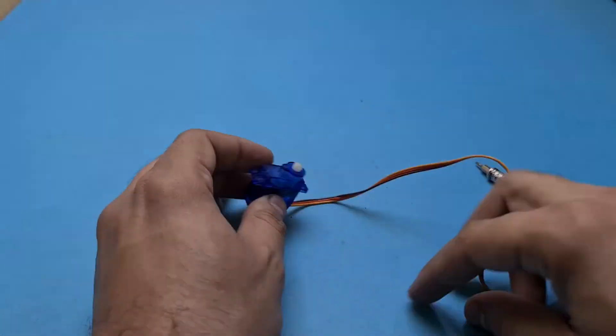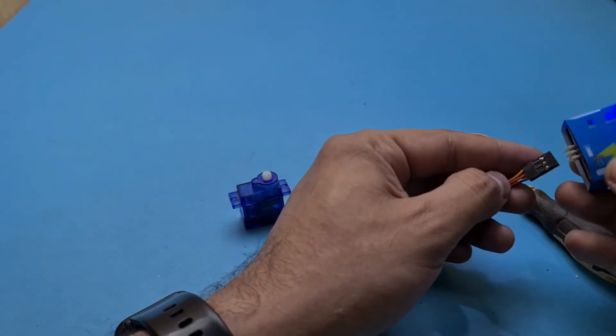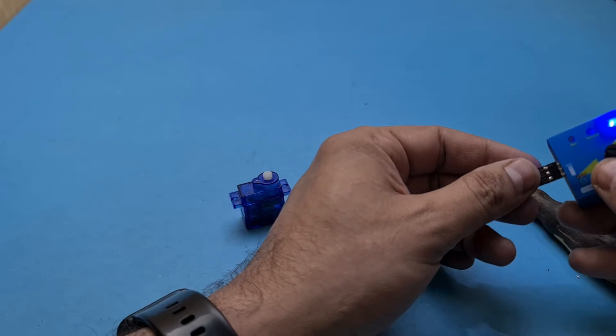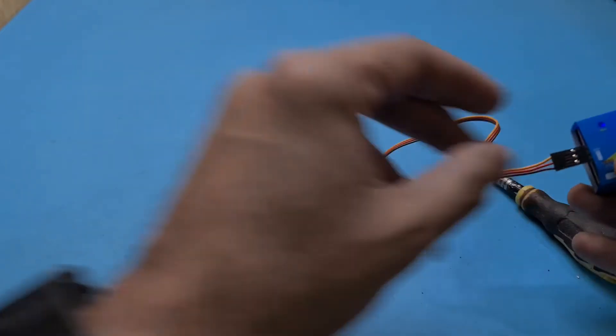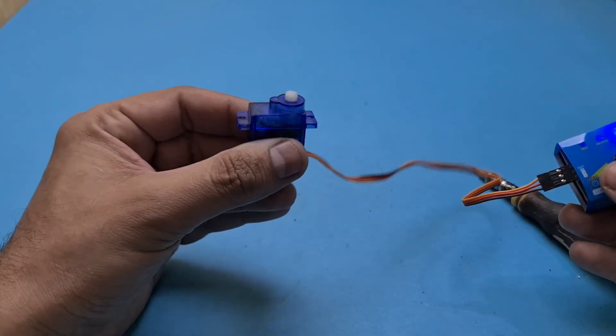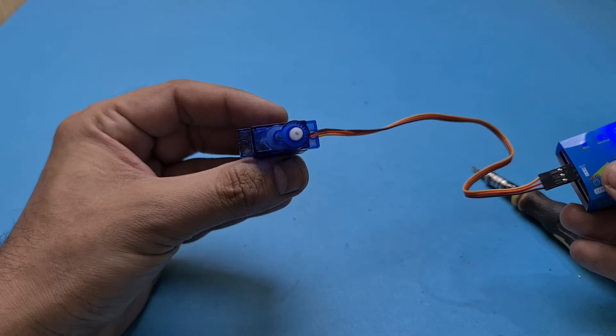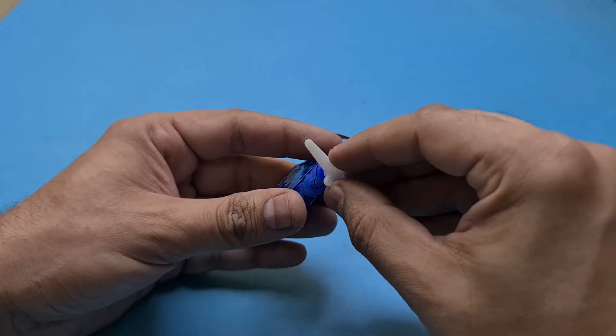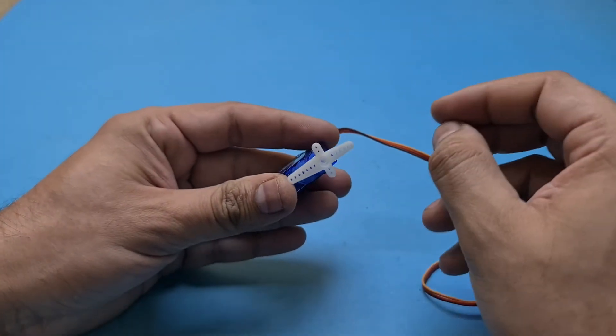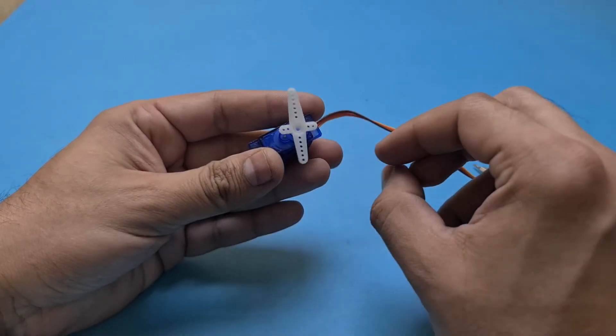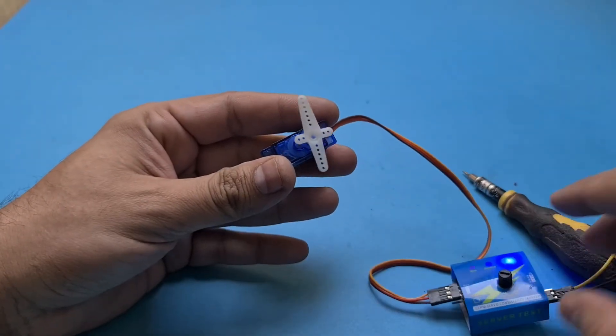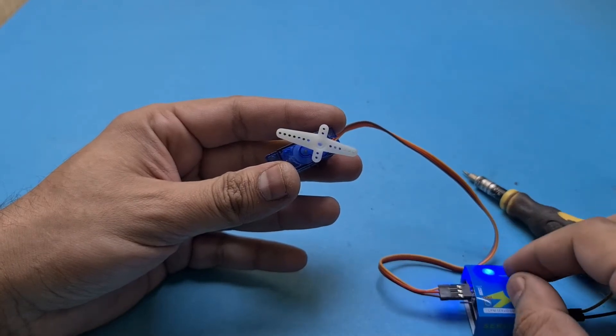I'll plug the servo connector into my servo tester, and you can see it's now moving. By the way, I'm planning to post a video on how to make your own servo tester—it's actually very easy to make one.